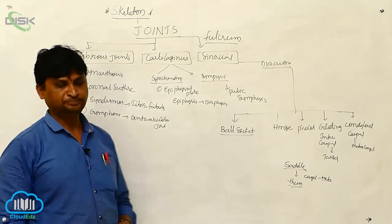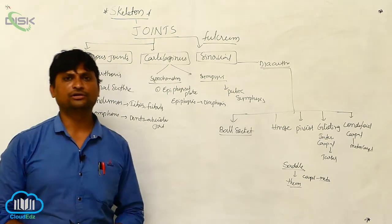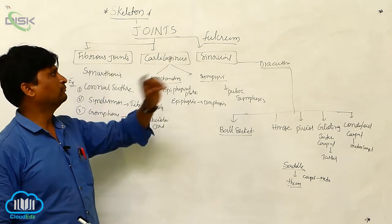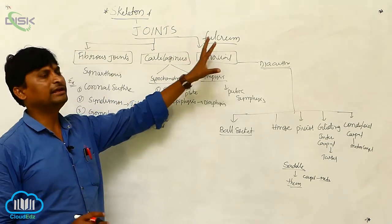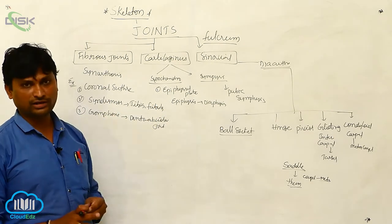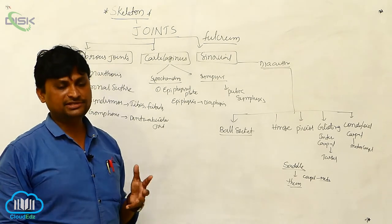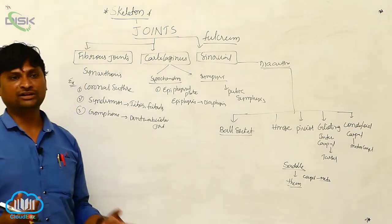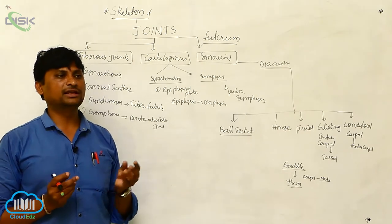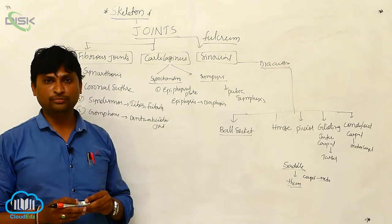After the completion of the skeletal system and appendicular skeletal system, now we are going to discuss about joints of the body. Joints basically give freedom of movement to the body. Without joints, the human body would be rigid, but with joints, the human body can show free movement. Some joints are acceptable for moderate movement, and some joints do not allow any type of movement.